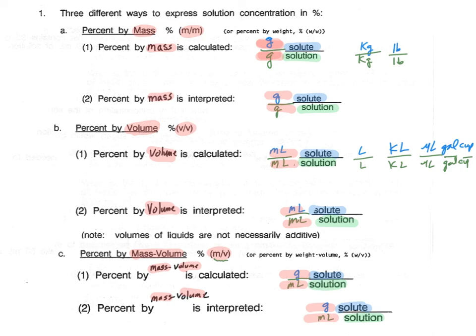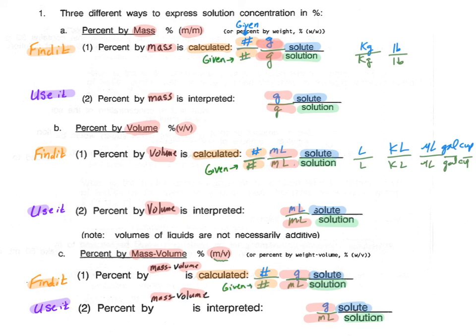For each of these, there are two major types of calculations. They are the find the percent that we call find it, and they use the percent, what I call use it. So in the find a percent, it's going to say how we calculate the percentage. For those questions, we're always going to look for the amount of solute on top of the amount of solution given in the question, and then multiply by a hundred percent.